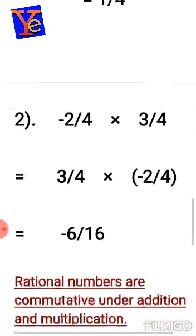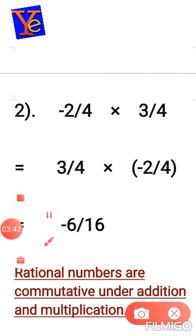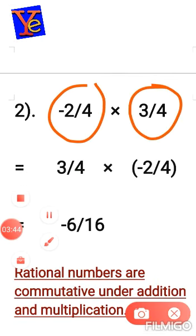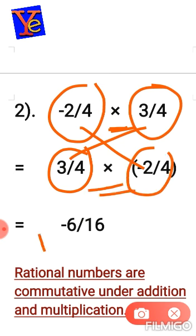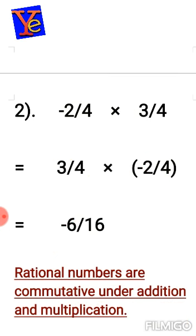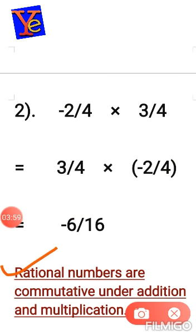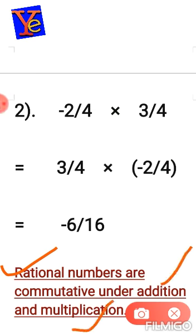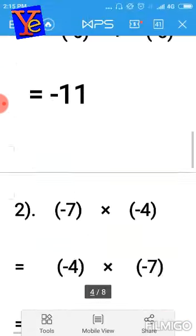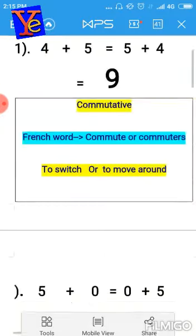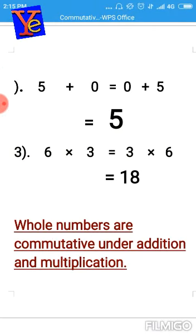Now for multiplication of rational numbers: if I take two rational numbers, multiply them, then switch their positions and multiply again, the answer is the same. This means rational numbers are commutative under addition as well as multiplication.